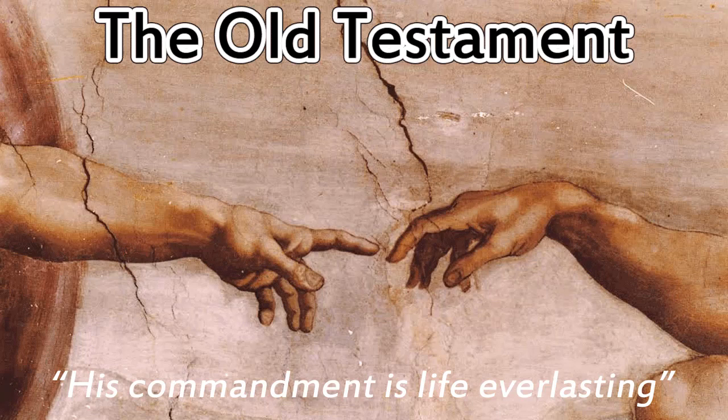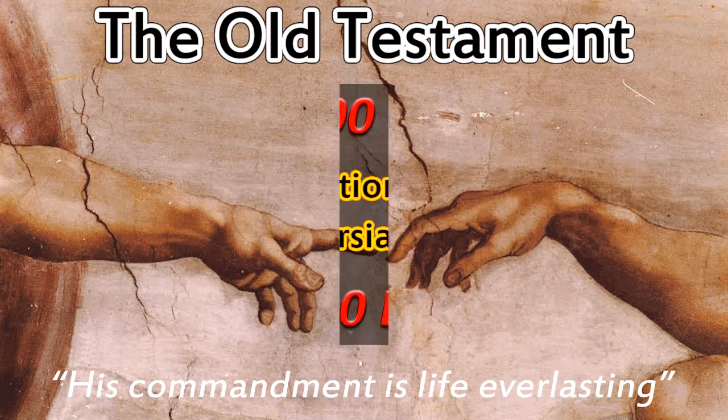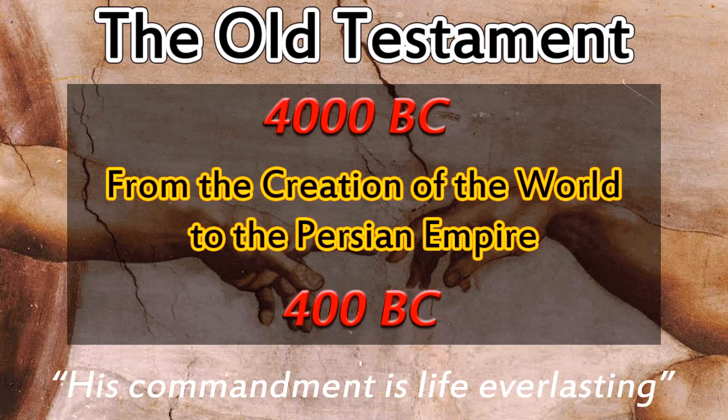A quick summary of the Old Testament. The Old Testament is the period from creation, around 4000 BC, to the period of the Persian Empire and Cyrus, the king of Persia, who allowed the Jews to return from captivity and rebuild their temple. The Old Testament ended around 400 BC.